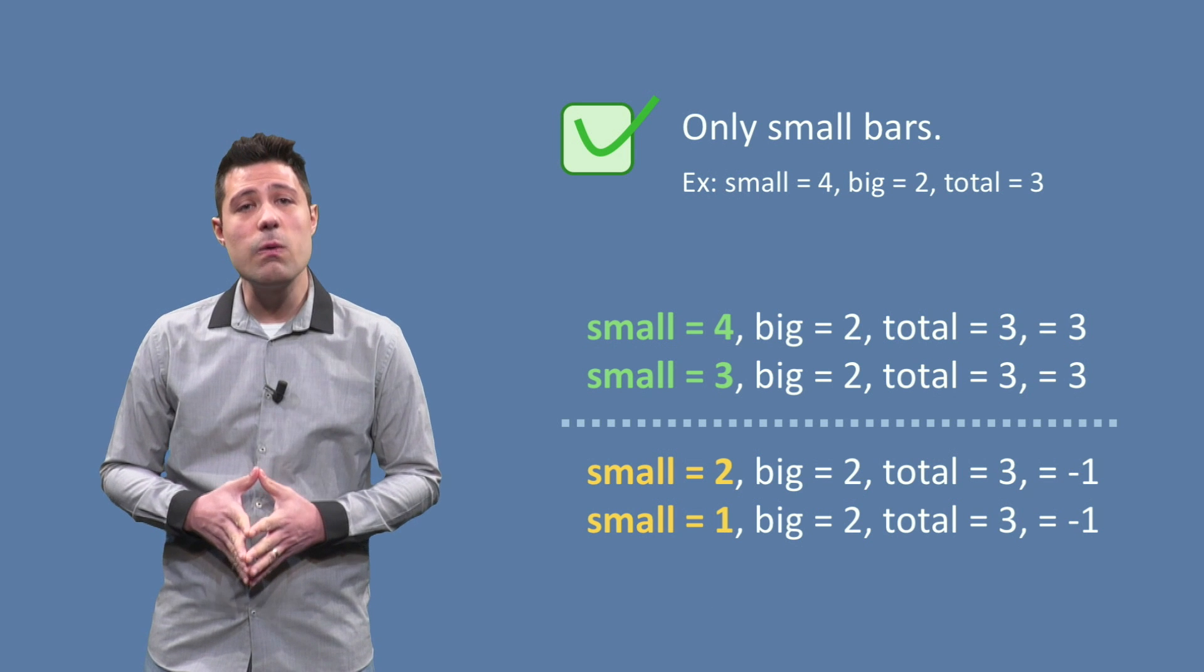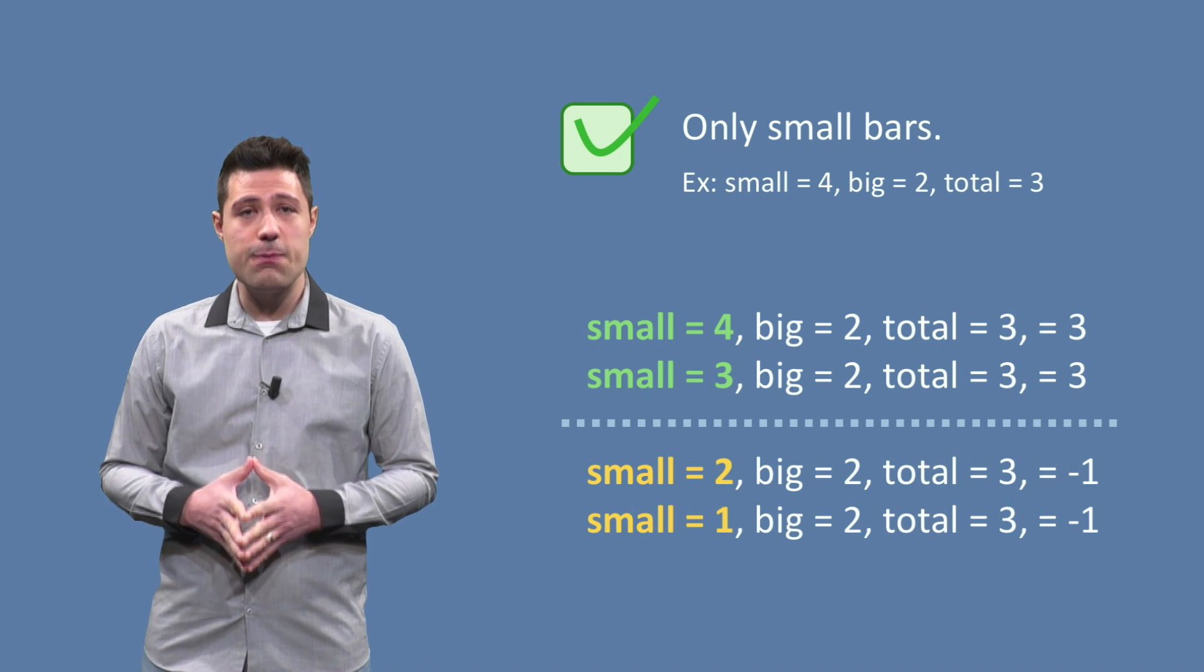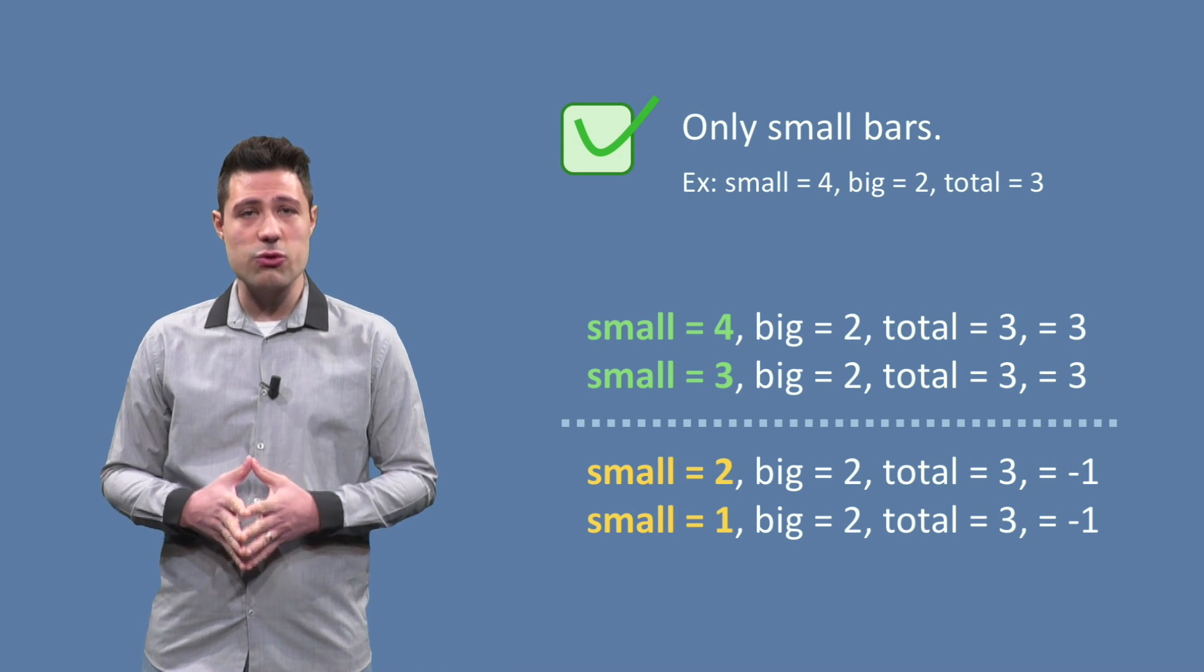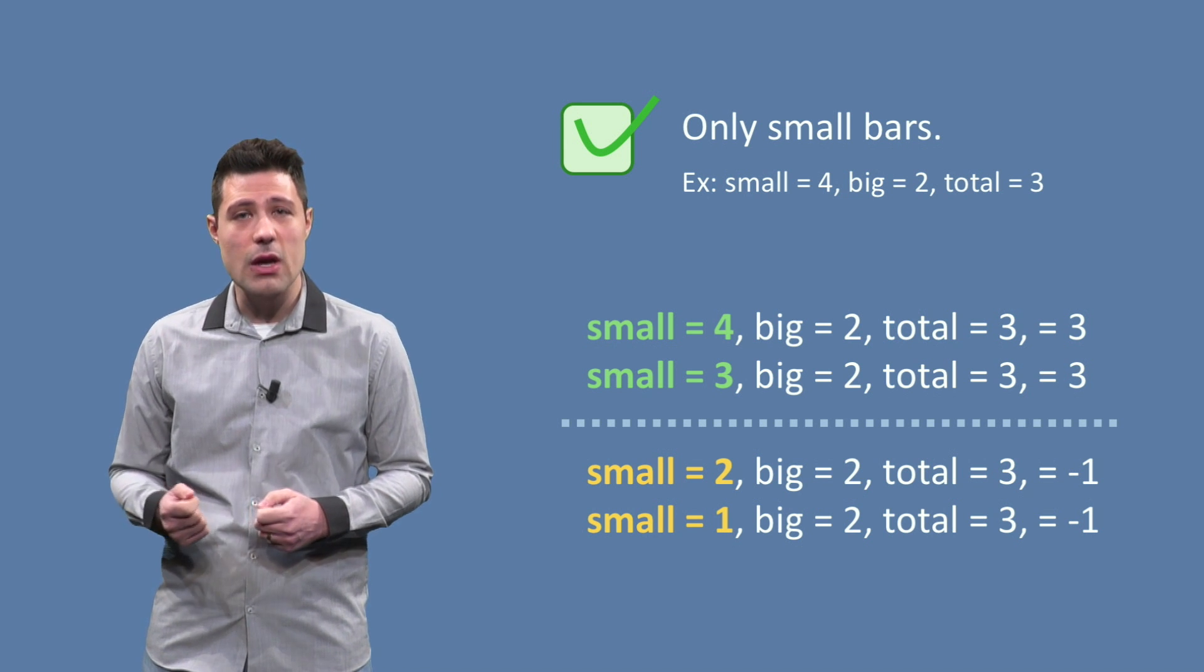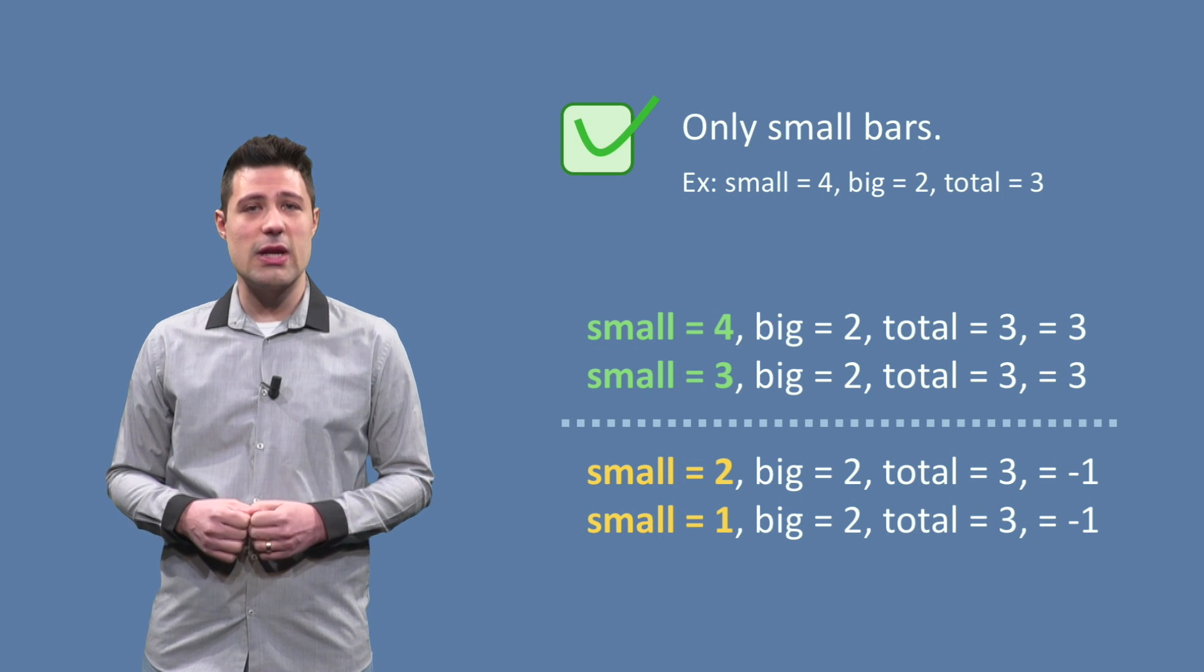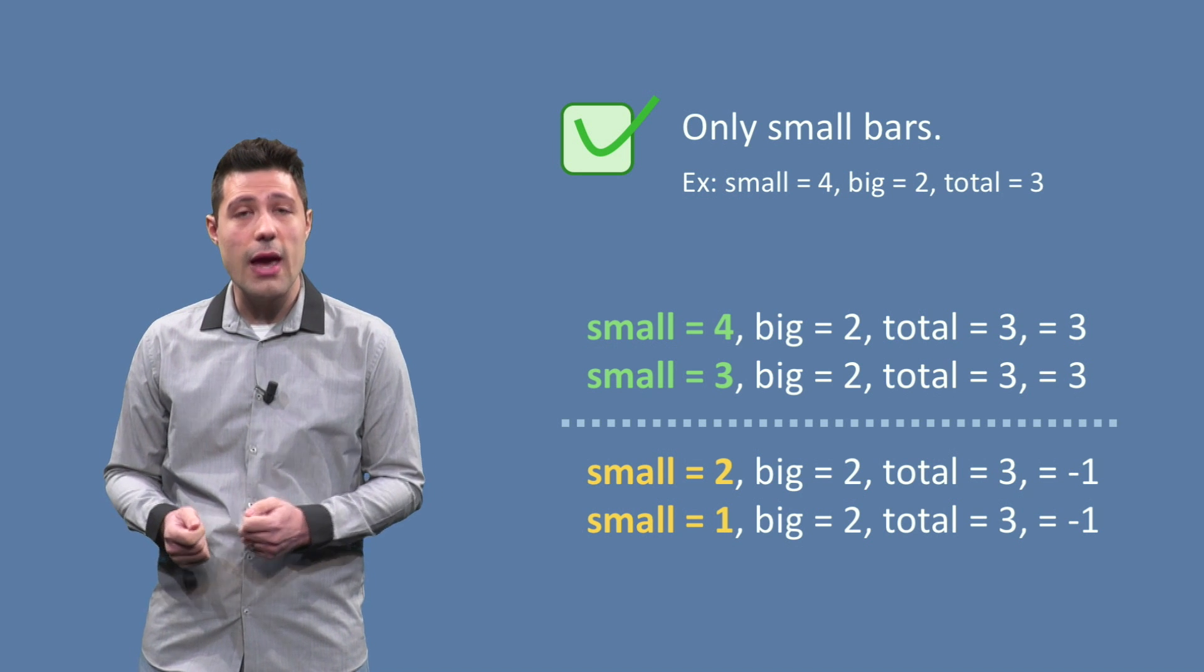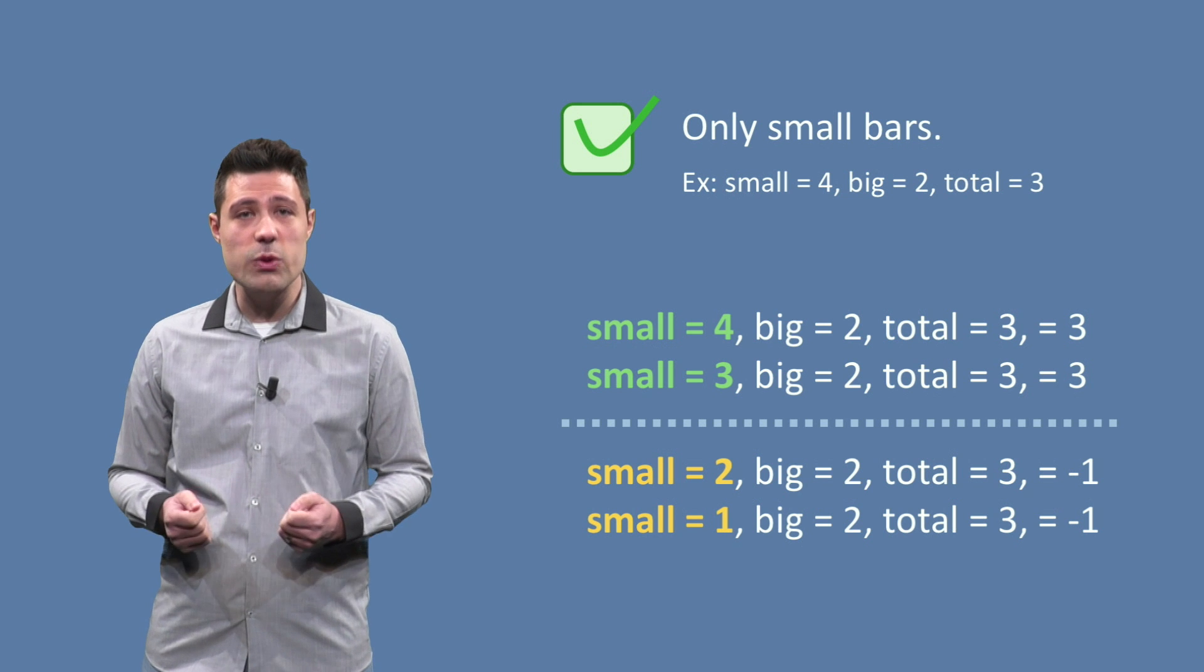Finally, the last partition, only small bars. If we have big equals 2 and total equals 3 as a starting point, then the boundary happens when small is between 3, which then means we have a solution that only uses small bars, and 2, which then means we don't have a solution.